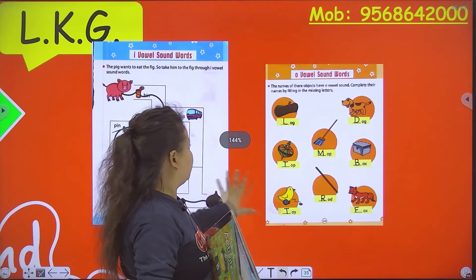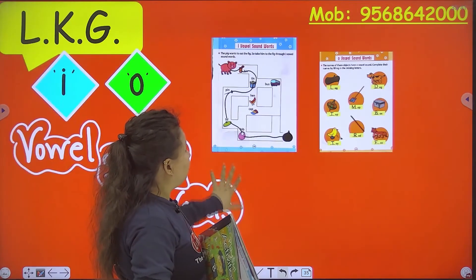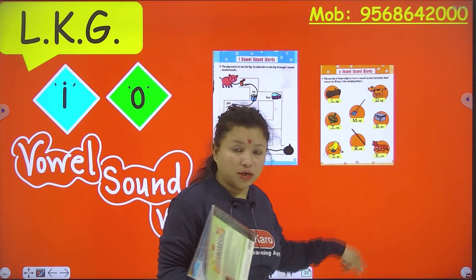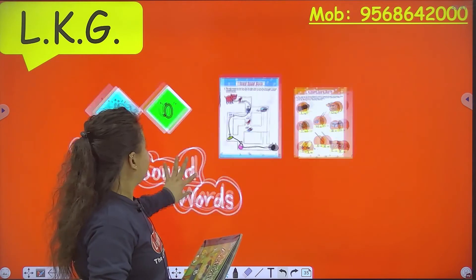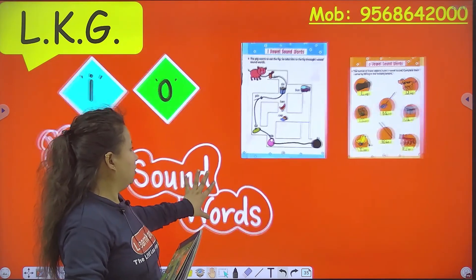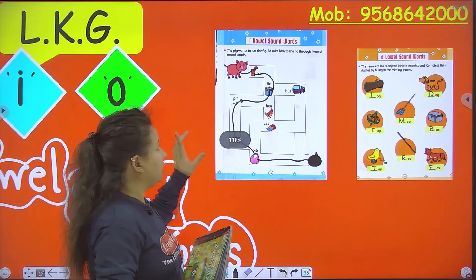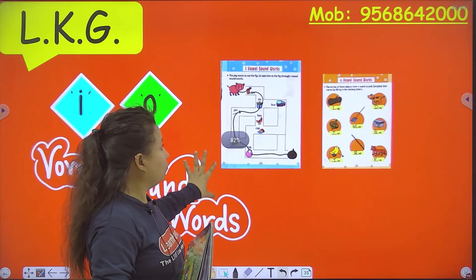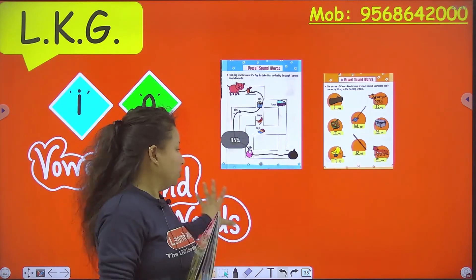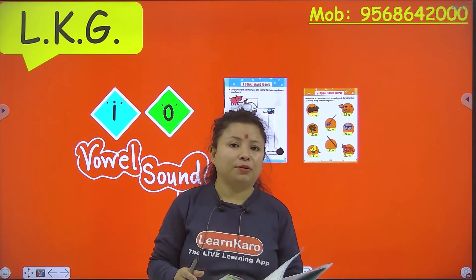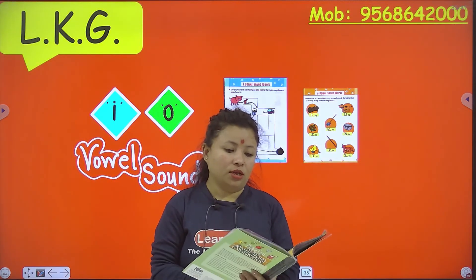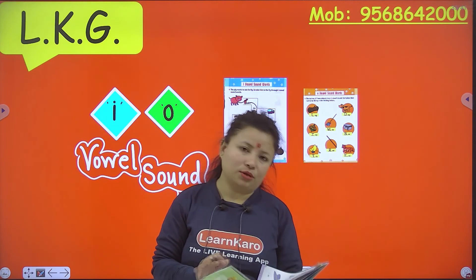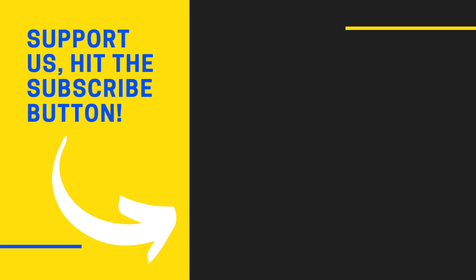That's it. Now you have to complete these two pages — page number 19 and page number 20 of the Playful Activity book. And I will be sending you the assignment related to I or O vowel sound words. Make sure you learn these words also. It's time to leave, but ma'am will come back soon with new sound words and rhyming words. Take care and goodbye, bye-bye!